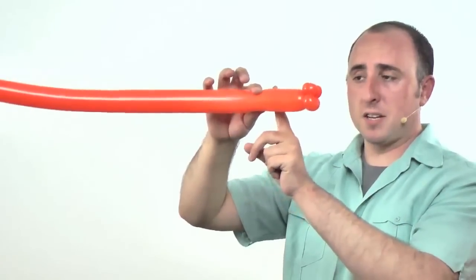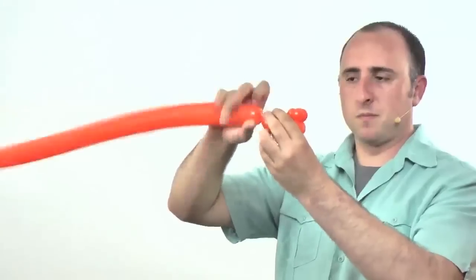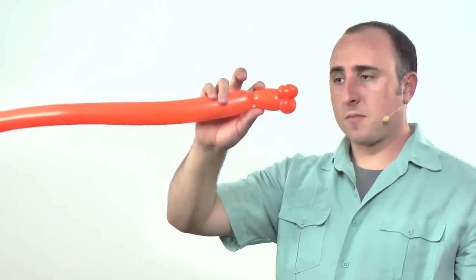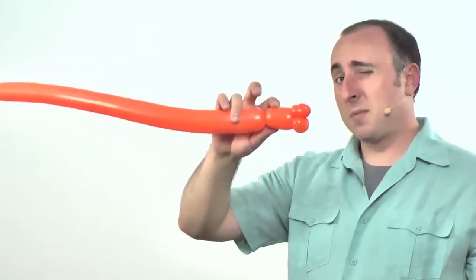The next section is the head. We're going to want to twist a body section about two or three inches, about that long.